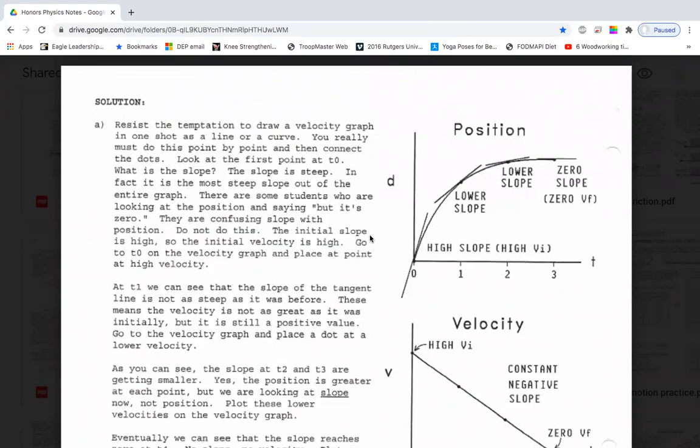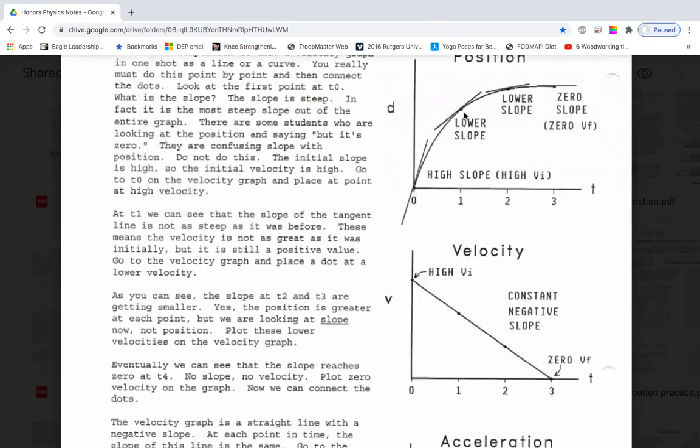Well here's a discussion on how to produce the velocity graph. You draw a tangent line with a high slope. The next tangent line with a lower slope. The next one even is lower than that. And finally, we have a tangent line that's just zero. We put each of these slopes on the velocity graph.